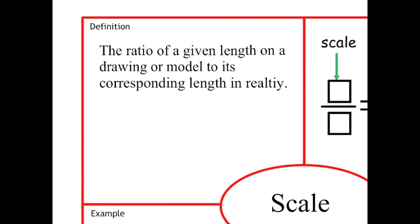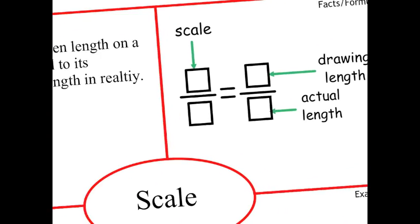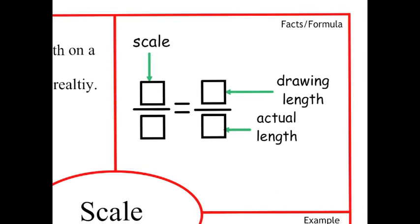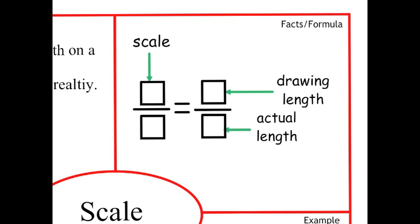In order to figure out scale you need to use a proportion. So that's going to be scale on one side and the drawing length and actual length on the other. So depending on what you're trying to find out determines where you put the numbers at. Scale on one side, drawing length, and then actual length.